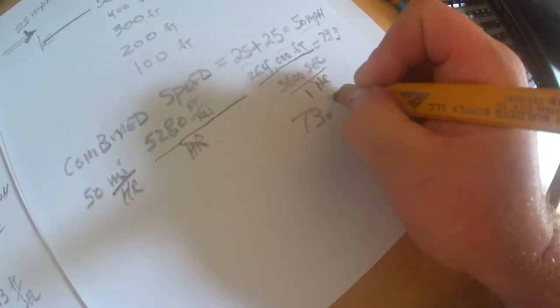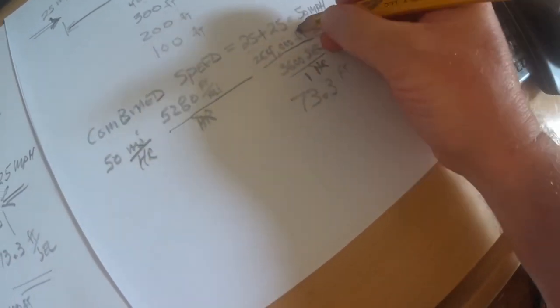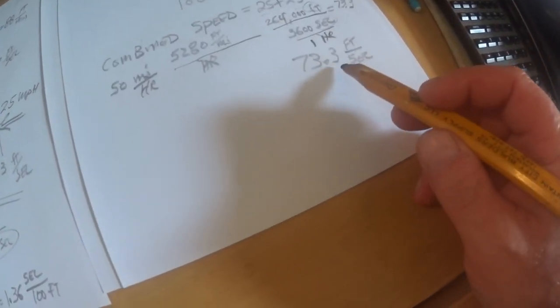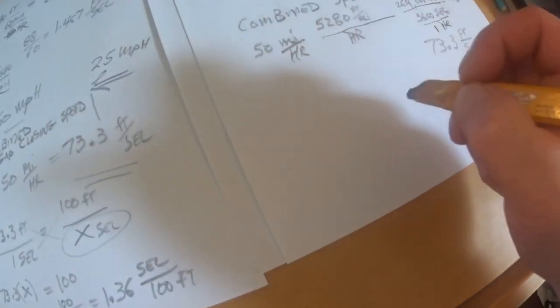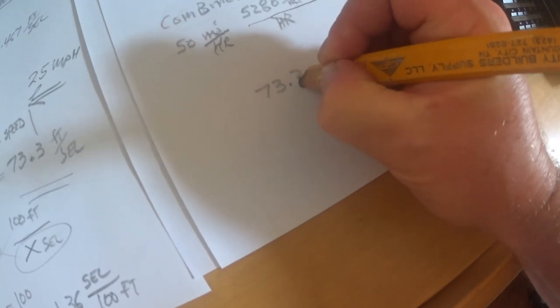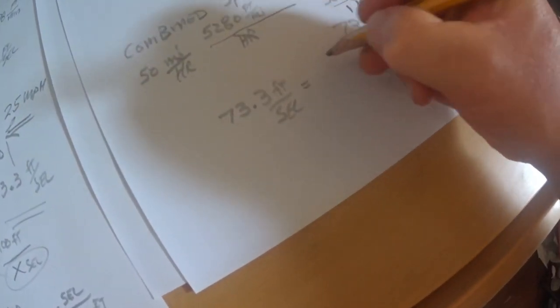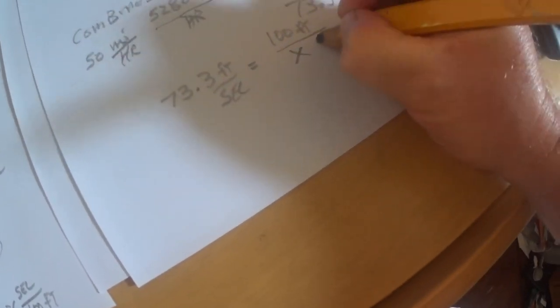So 73.3, that would be feet per second. If you want to know how many seconds it's going to take to go 100 feet, I guess that's the next thing we want to do. So you take 73.3 feet per second and you set that equal to 100 feet over x seconds. And that's what we're trying to find. How many seconds is it going to take to go 100 feet?